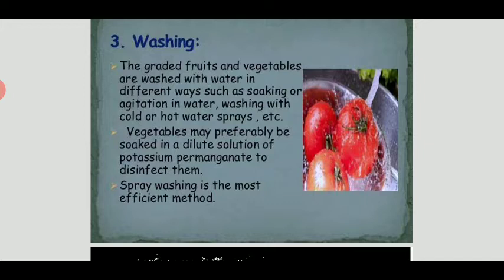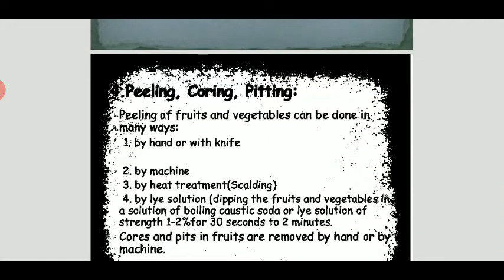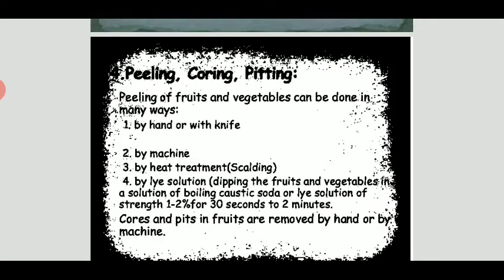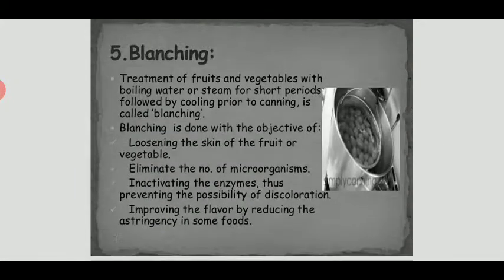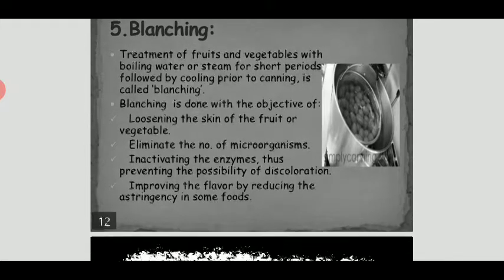Washing is the next step, where fruits or vegetables are soaked in cold or hot water, and treated with potassium permanganate to disinfect them. Then peeling, coring, and pitting are done manually, by machines, or by lye treatment using heat. Blanching follows, where fruits or vegetables are dipped in boiling water and immediately treated with cold water to loosen the skin, eliminate microorganisms, and improve flavor by reducing astringency.